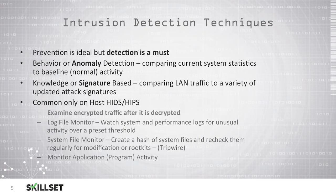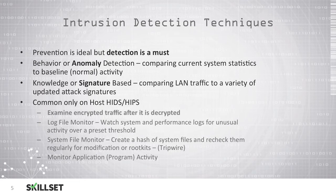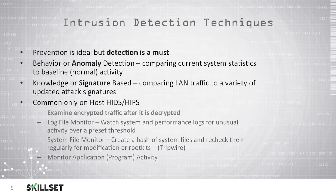You can use a log file monitor to watch your system and performance logs for any unusual activities and notify an administrator. A system file monitor can create a hash value or digital fingerprint for your system files and then regularly check them to see if they have been modified or if perhaps a rootkit has been installed — Tripwire is a common tool to do this. You can also monitor any application or program activity. These detection mechanisms are only found on host-based intrusion detection systems and not on network-based intrusion detection and prevention systems.